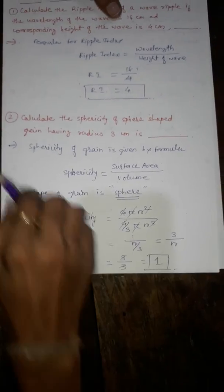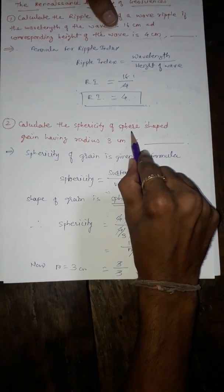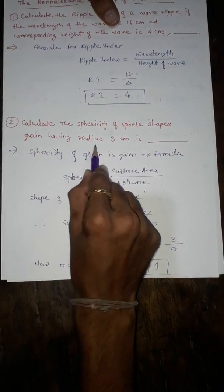Now, moving on to the second numerical. Calculate the sphericity of a sphere-shaped grain having radius 3 cm.